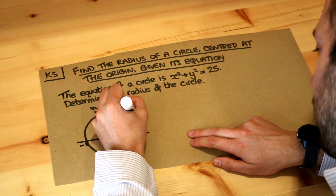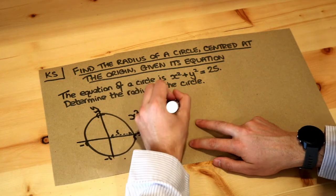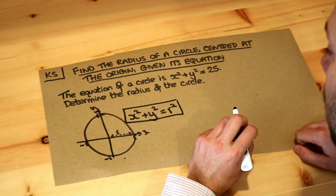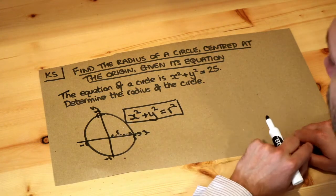Then the equation of that circle was x squared plus y squared is equal to the radius squared. So that's the general equation of a circle centered at the origin. If it's not centered at the origin then the equation is more complicated and we won't explore that in this video.